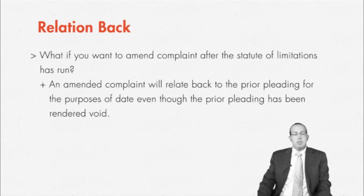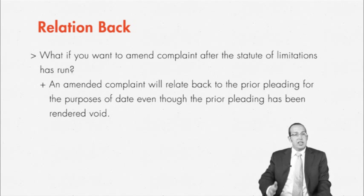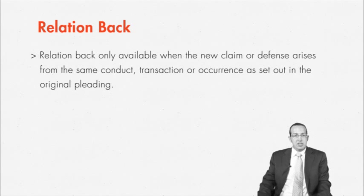Now, let's say you want to make your amendment after the statute of limitations has run. If you were to file the complaint for the first time now, you would be kicked out of court for being late. The rules do something interesting — they call for a relation back to the prior pleading. That means the amended pleading will relate back to the prior pleading for the purposes of date, even though the prior pleading has been rendered void and no longer exists after the amendment. Nevertheless, the new pleading will be given the date of the prior pleading. Relation back is available only when the new claim or defense arises from the same conduct, transaction, or occurrence as set out in the original pleading. If you want to add something completely different, the amendment will not relate back to the original filing and you'll be stuck with the new date.